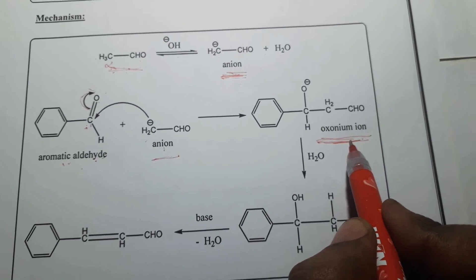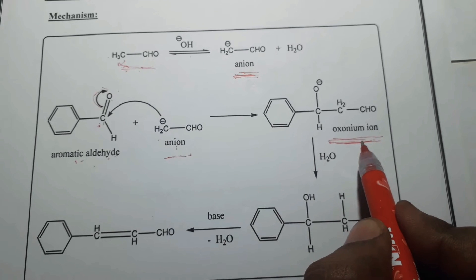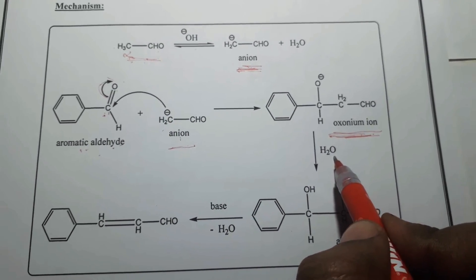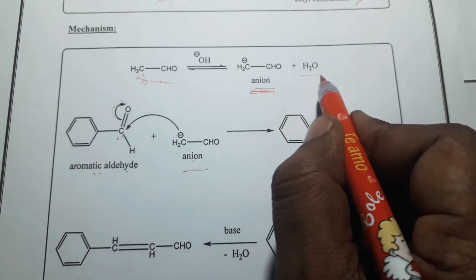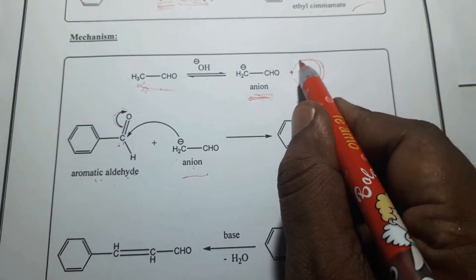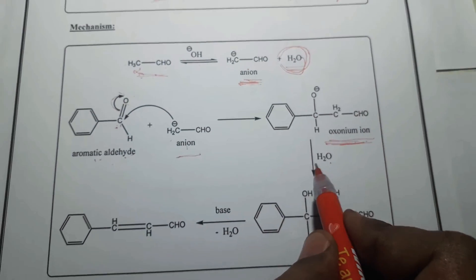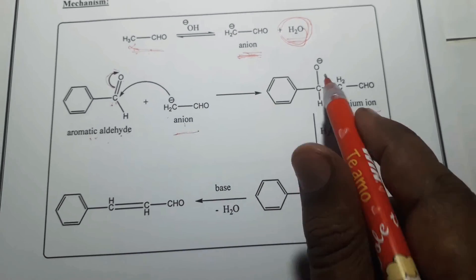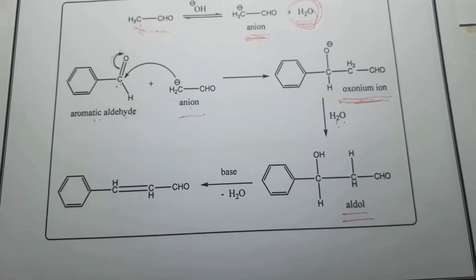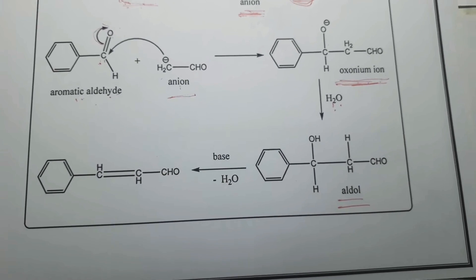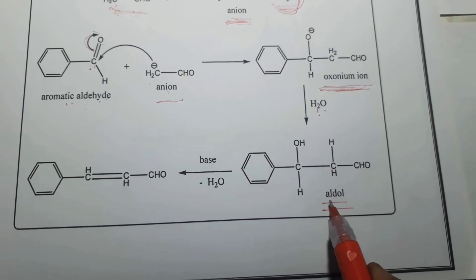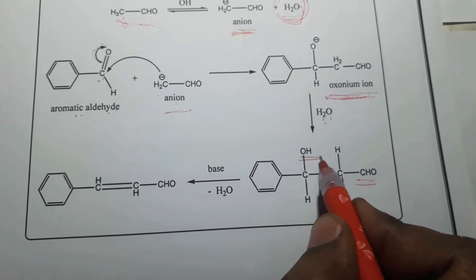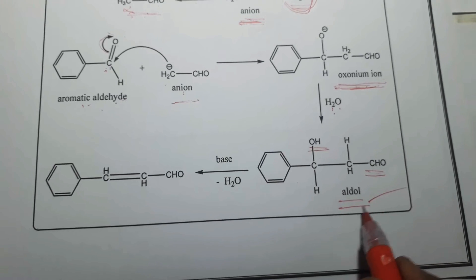Further, this oxonium ion takes the proton from water. During the formation of the anion, a water molecule is generated. From that water molecule, the oxonium ion takes the proton, leading to produce the aldol — a molecule consisting of both an aldehyde group and an alcohol group, which is considered as the aldol intermediate.